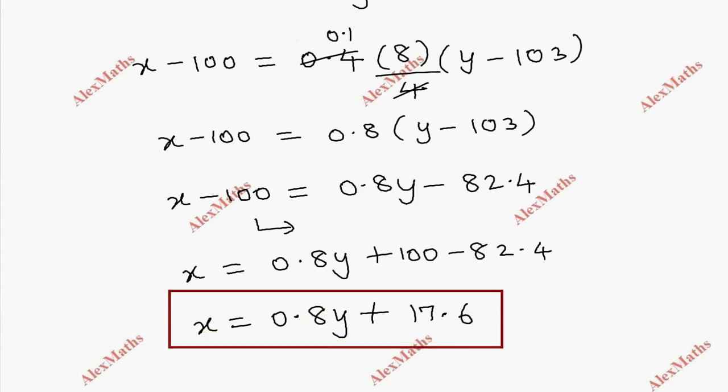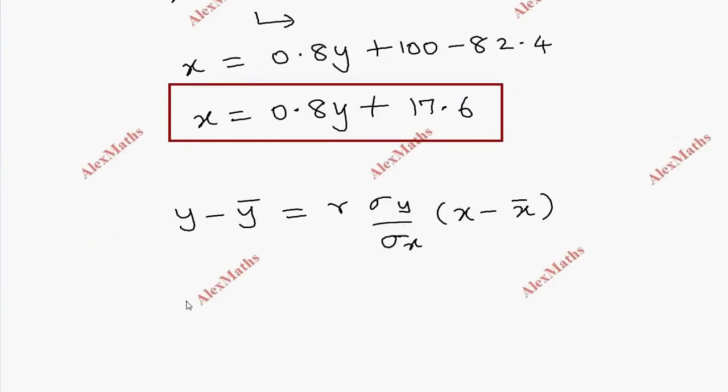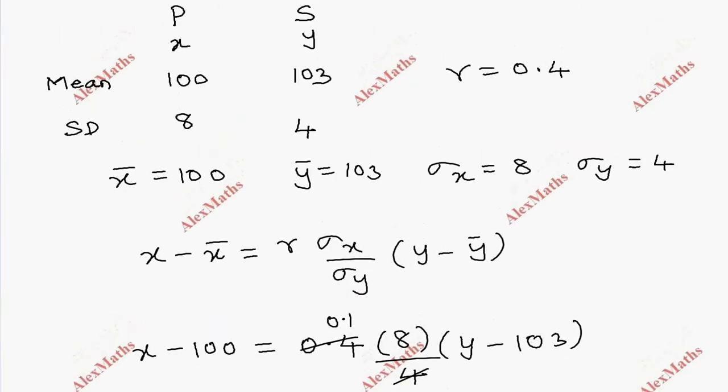Now regression of S on P uses the other formula: y minus ȳ equal to r into σy by σx into x minus x̄. So y minus 103 equal to r value 0.4.